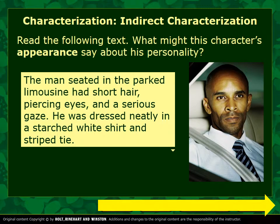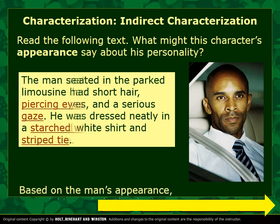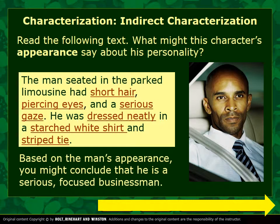The man is seated in the park limousine. He had short hair, piercing eyes, and a serious gaze. He was dressed neatly in a starched white shirt and striped tie. All of this is a physical description of his appearance — but do you start to learn about his personality? Do you start to make guesses as to why he would be in a limousine? Is he successful? Is he homeless? Based on the highlighted words, you might conclude that he's a serious, focused businessman.